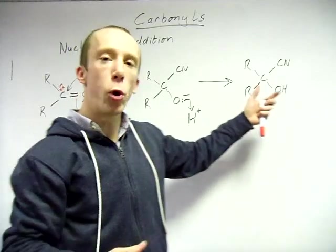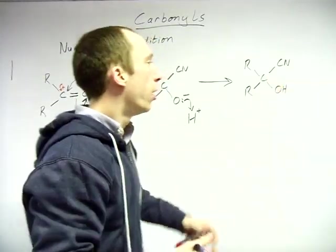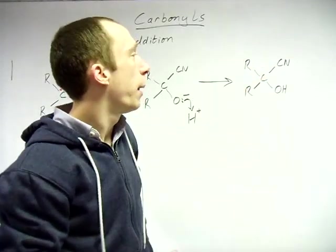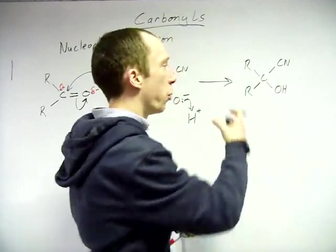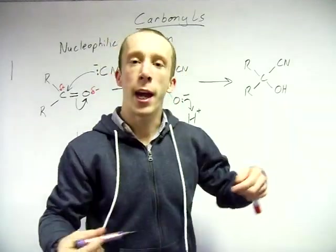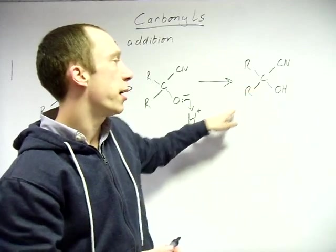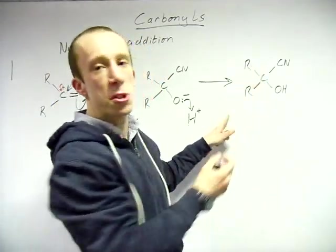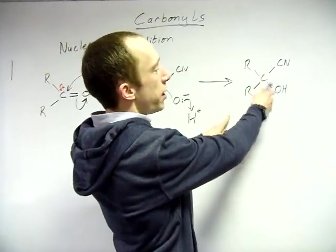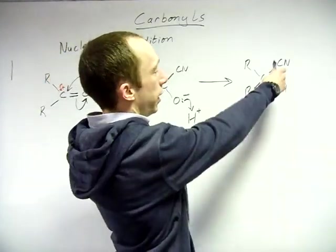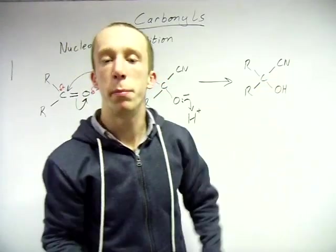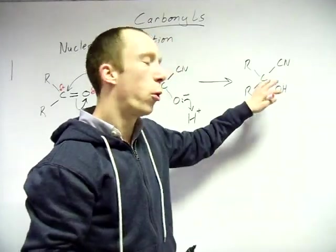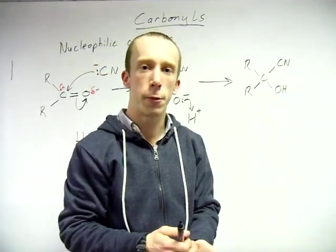What you've formed is a hydroxynitrile. To name it, you need to know the carbon chain length. You put 'hydroxy' at the front, and number the position. For example, if the longest chain gives you a 2-hydroxy, 2-methyl arrangement, it might be named 2-hydroxy-2-methylbutanenitrile. Make sure you can do the organic naming — exams usually ask you to name the product.